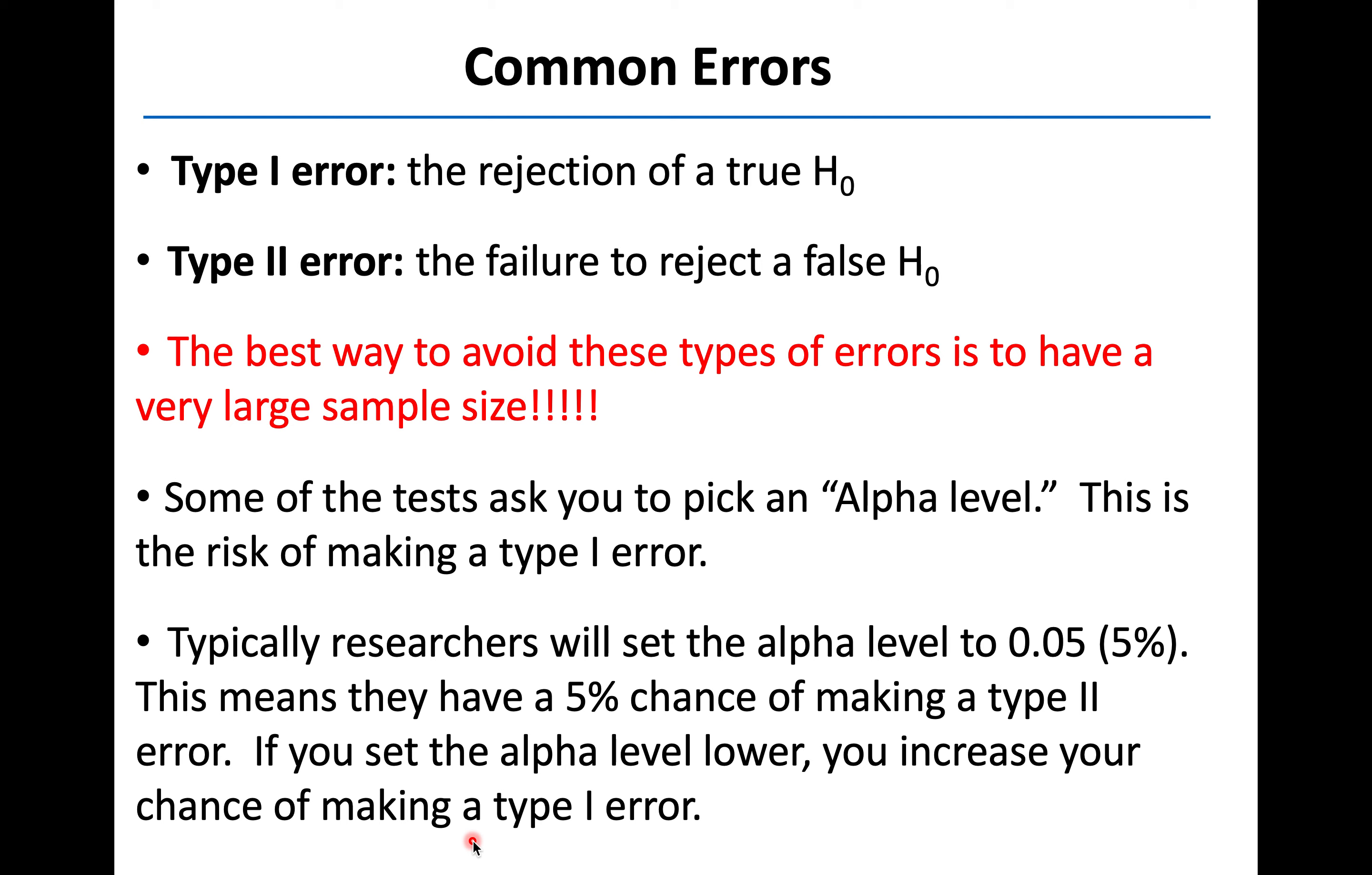To wrap this up here, I did want to point out that despite best efforts with these tests, there are some common statistical errors that get made, or errors in interpretation. And these are typically defined as either type 1 or type 2 errors. So in a type 1 error, you are rejecting a true null hypothesis.